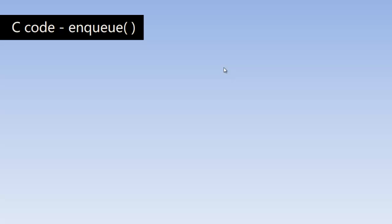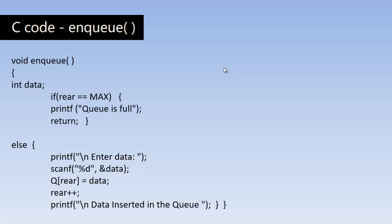Now we will look at the C code for the enqueue operation. In the enqueue function we have declared one variable called data, which is the element to be inserted into the queue. First we check whether rear equals max or not. Max is a constant defined using a hash define statement. If rear equals max, the queue is full and we cannot insert any element.